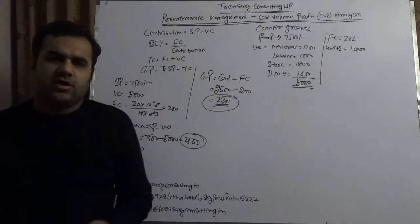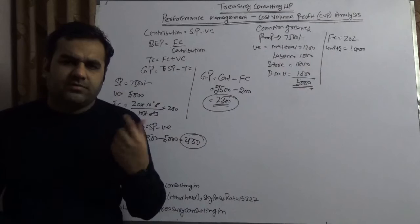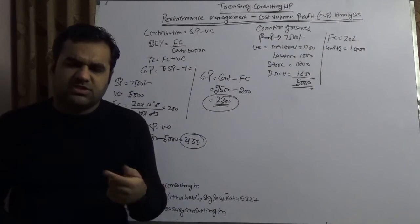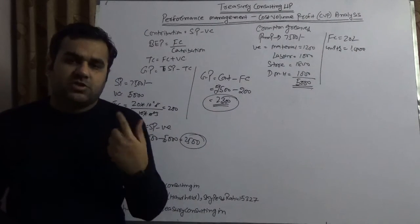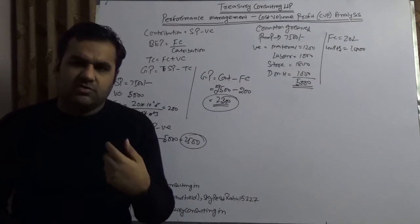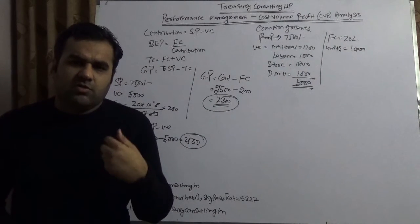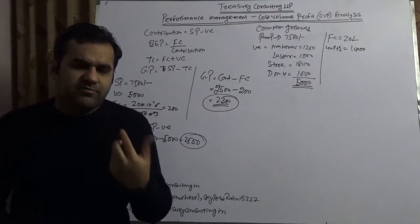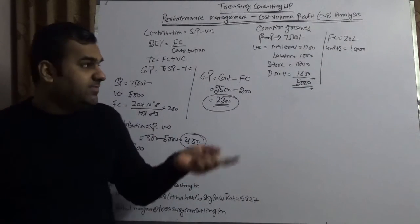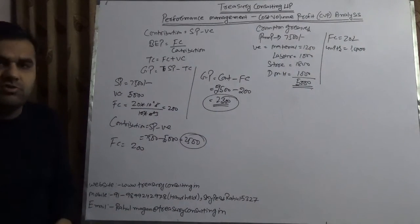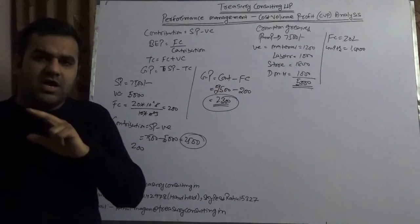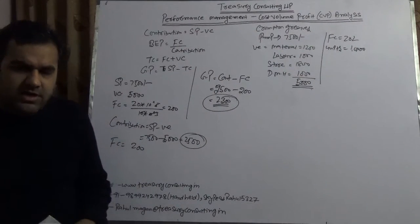You need to understand that costing is of various types. You have absorption costing, throughput costing, target costing, target profit costing, activity-based costing, relevant cost costing, marginal costing, and CVP which we are covering here—Cost Volume Profit Analysis. You have different kinds of costing.